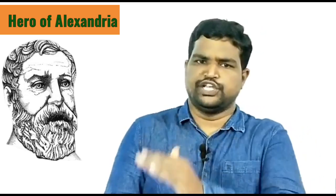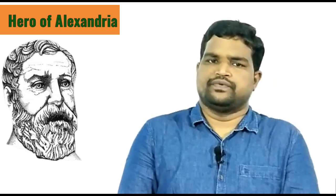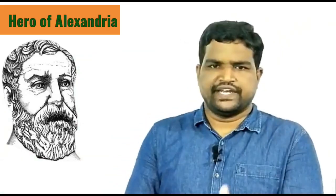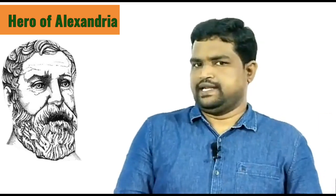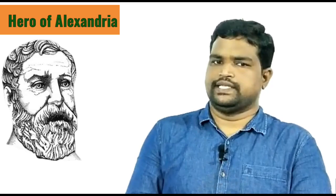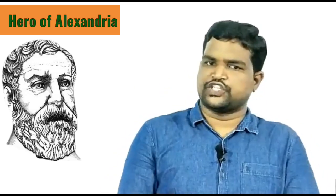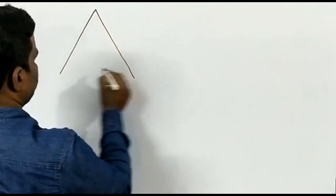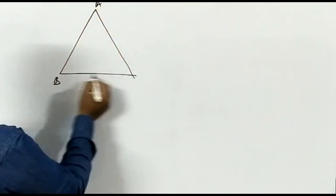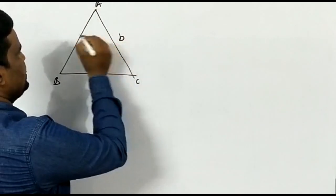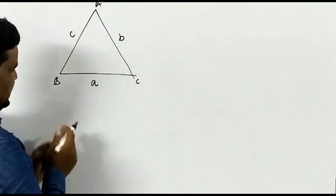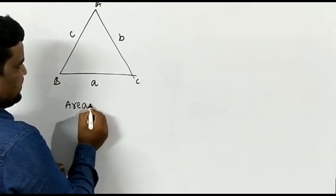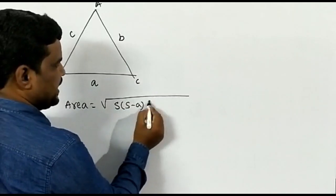Heron of Alexandria was an ancient Greek mathematician and also an engineer. He lived between the first century BC and the first century AD. According to Heron, we can calculate the area of any triangle — whether it is scalene, isosceles, or equilateral — when given three sides of that triangle. Suppose in triangle ABC, let the lengths of three sides be A, B, and C.